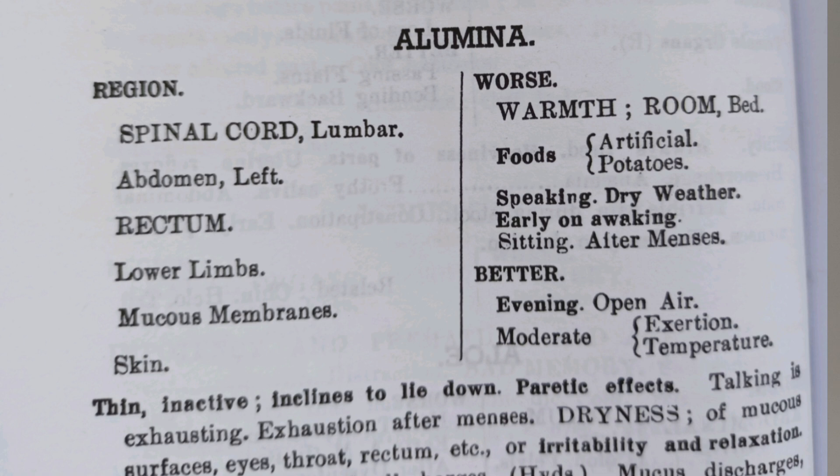The more marked, the more characteristic, the more capital is given. The more bold letters are used — this is why the symptoms are so important. Every drug has two columns: one is the sphere of action, because Boger Sir considers organ affinity to be very important. In the second column, there are modalities.